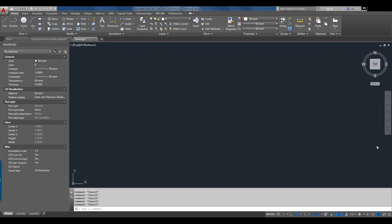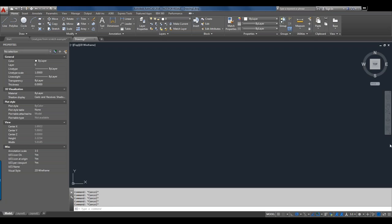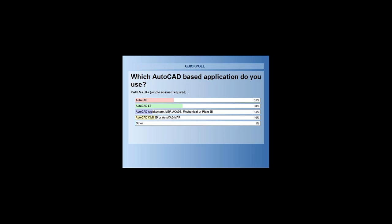Let's take a look at our next poll. We like to know which AutoCAD application you're using. We tend to get a variety of end users — anything from AutoCAD to AutoCAD LT, some of the verticals like AutoCAD Architecture, Civil 3D, and even other software. These webinars are tailored for AutoCAD LT and AutoCAD, and anything done in those applications can be done in the vertical applications as well for the most part. Some things may not work in AutoCAD LT since that functionality hasn't been built in — it is the younger sibling of AutoCAD.